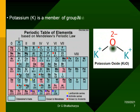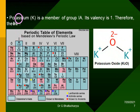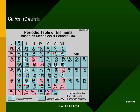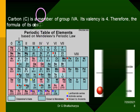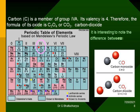Potassium (K) is a member of group 1A. Its valency is 1. Therefore, the formula of its oxide is K₂O, potassium oxide. Carbon (C) is a member of group 4A. Its valency is 4. Therefore, the formula of its oxide is C₂O₄ or CO₂, carbon dioxide, while carbon monoxide is CO.